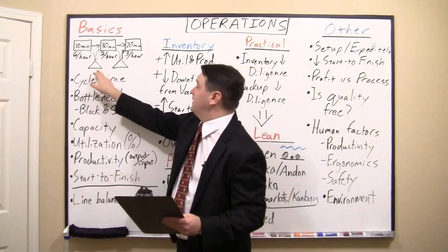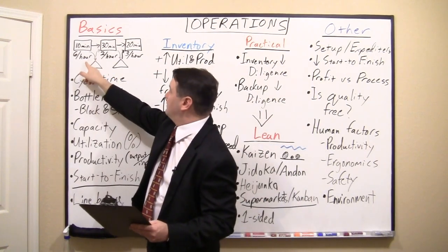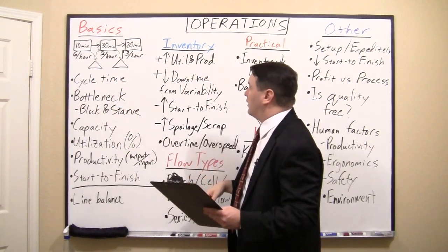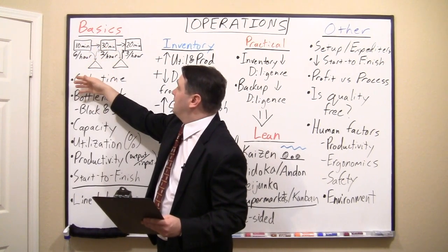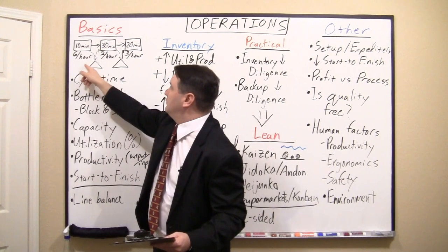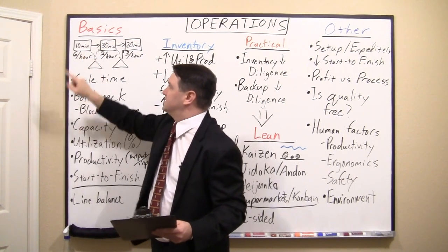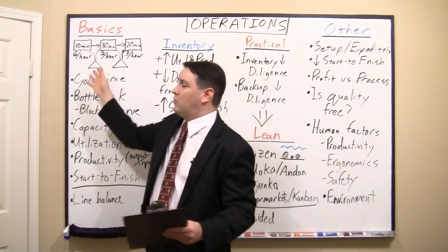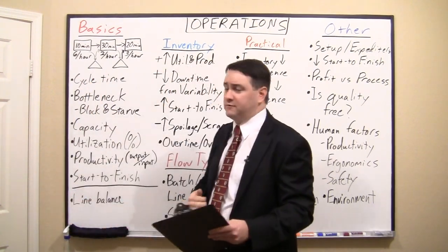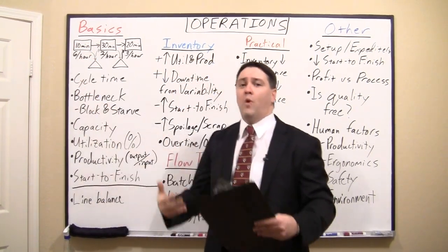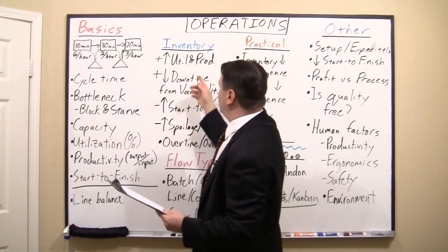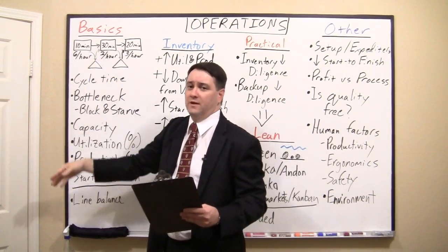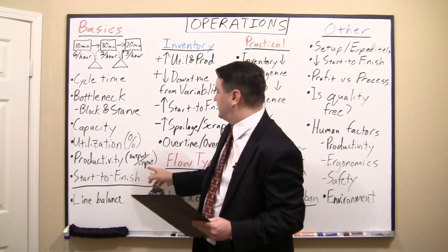That's what those triangles were added for. The first operator works faster than the bottleneck, so they get blocked. But if we give them an inventory queue where they can put extra work, they can continue working. In a one-hour day, the first operator does two pieces — one goes to the operator, the second goes in the queue — and then they can be assigned elsewhere in the factory. So inventory in that instance will actually increase utilization and productivity.